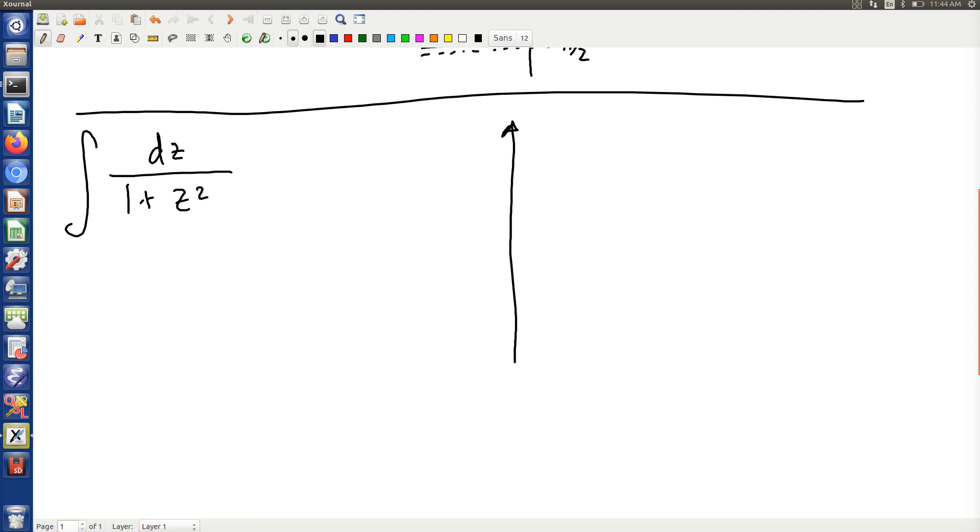Let's think for a moment about the integral of dz over 1 plus z squared. If I plot this in the complex plane, this function has two poles, one pole at minus i and one pole at plus i.